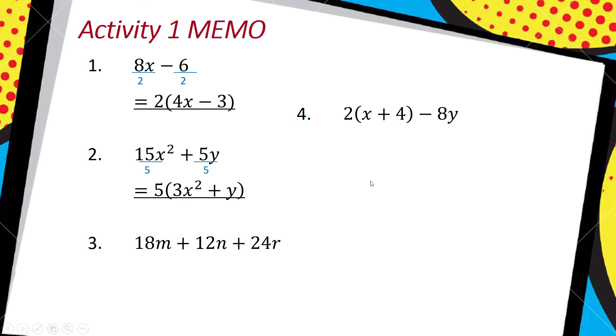And the next one, the highest common factor that goes into 18, 12, and 24 is 6, so I divide by 6. I'm going to say equals 6, open bracket. 18 divided by 6 is 3m, plus 12 over 6 is 2n, plus 24 over 6 is 4r.